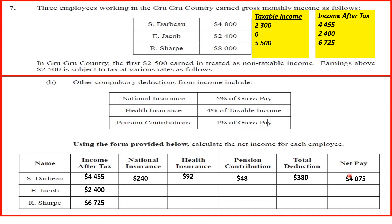For EJ Cup: national insurance is 5% of $2,400, giving $120. Health insurance is 4% of taxable income — his taxable income is zero, so the health insurance charge is zero. Pension contribution is 1% of $2,400, giving $24. Adding national insurance, health insurance, and pension contribution gives total deductions of $144. Subtracting $144 from his income after tax of $2,400 gives a net pay of $2,256.